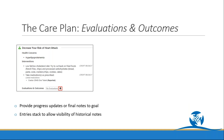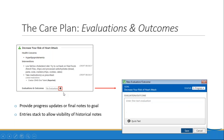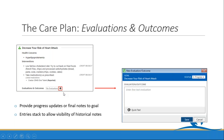The evaluation and outcomes section is the newest section and is used to add any notes relevant to the goal or the progress of the patient. Add to this section by selecting the plus sign — here you have free text or quick text. When you're done, press save.